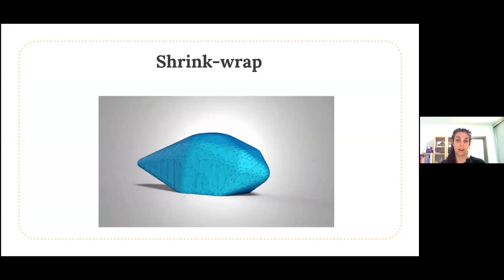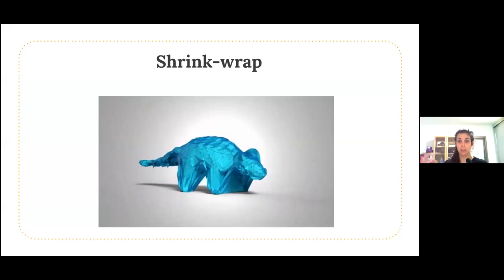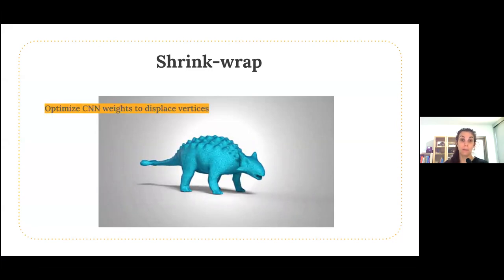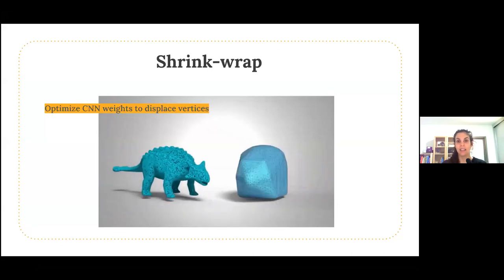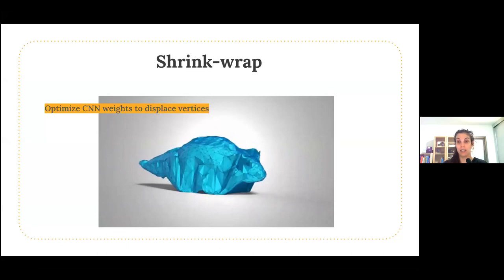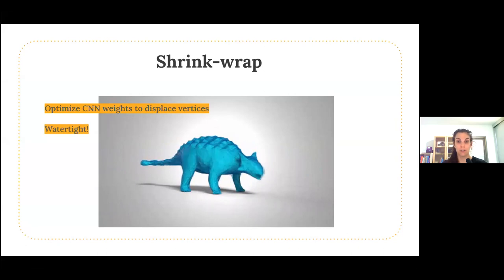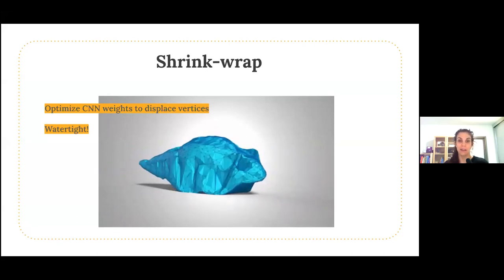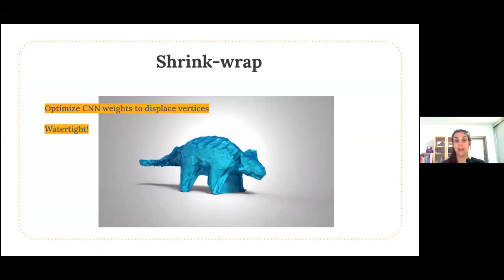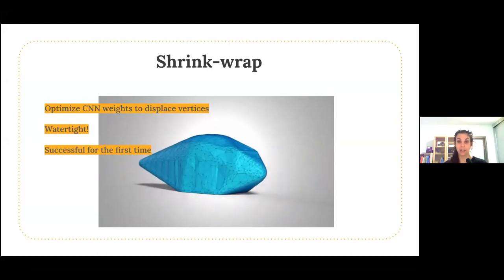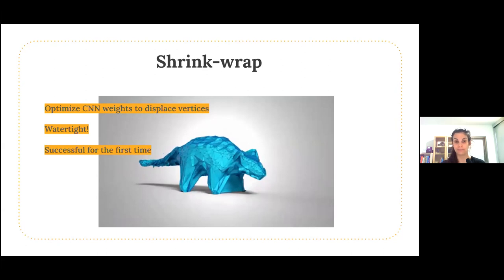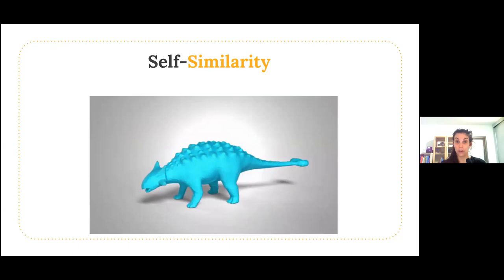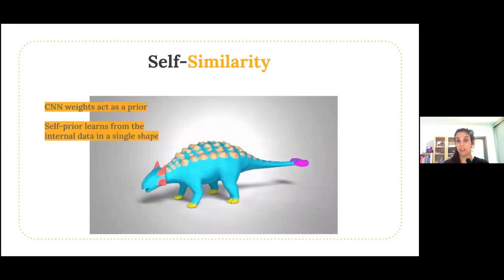The way our self-prior works is through a method of shrink wrapping. We start with an input point cloud and some initial mesh, and then we iteratively optimize the CNN weights to deform the mesh to shrink wrap the input point cloud. This strategy is really appealing because it gives us all sorts of geometric guarantees, like ensuring our reconstruction is watertight or manifold, and can even preserve the genus. Because of these desirable properties, shrink wrapping has been attempted many times before, but these attempts were considered unsuccessful — they required manual tuning or intervention to work on different shapes. But Point-to-Mesh successfully performs the shrink wrapping by leveraging the power of neural networks to learn from internal data. The optimized CNN weights act as a self-prior and encode the expected shape properties.